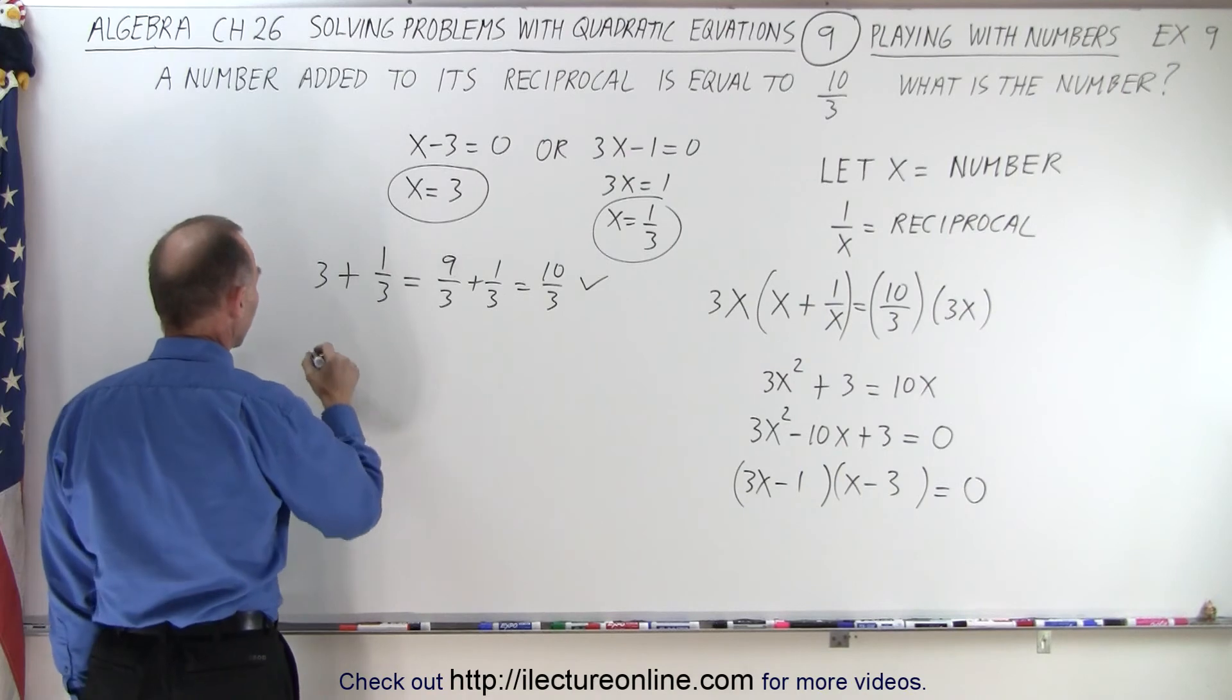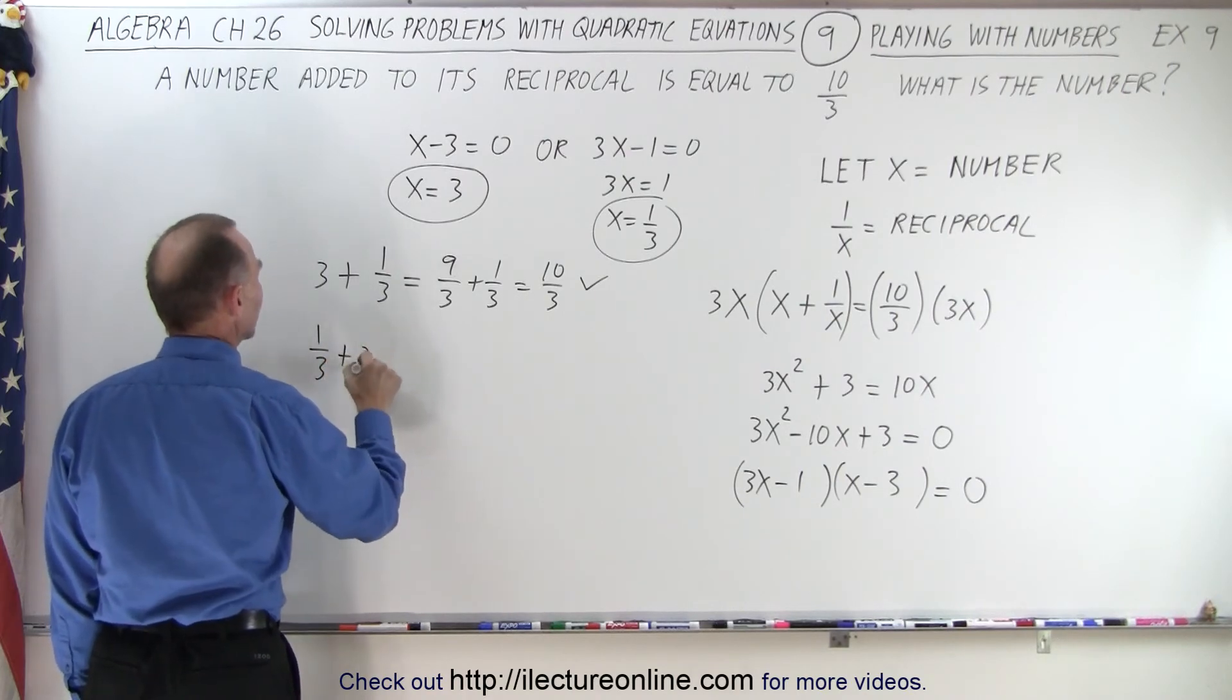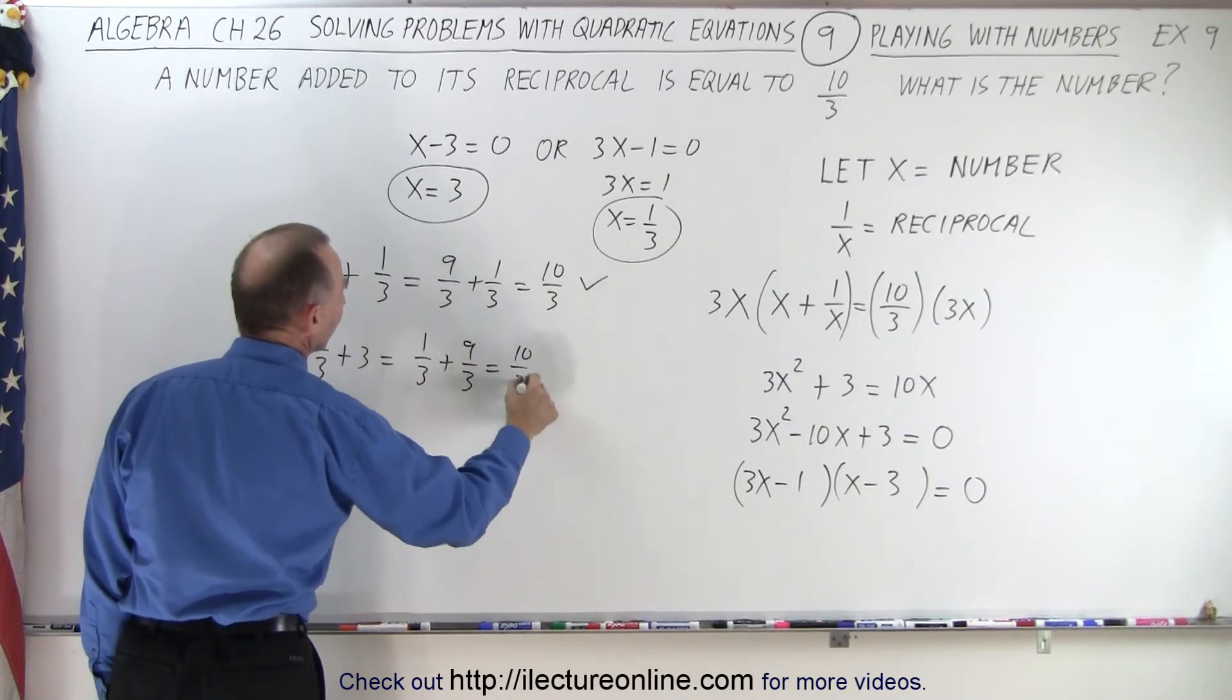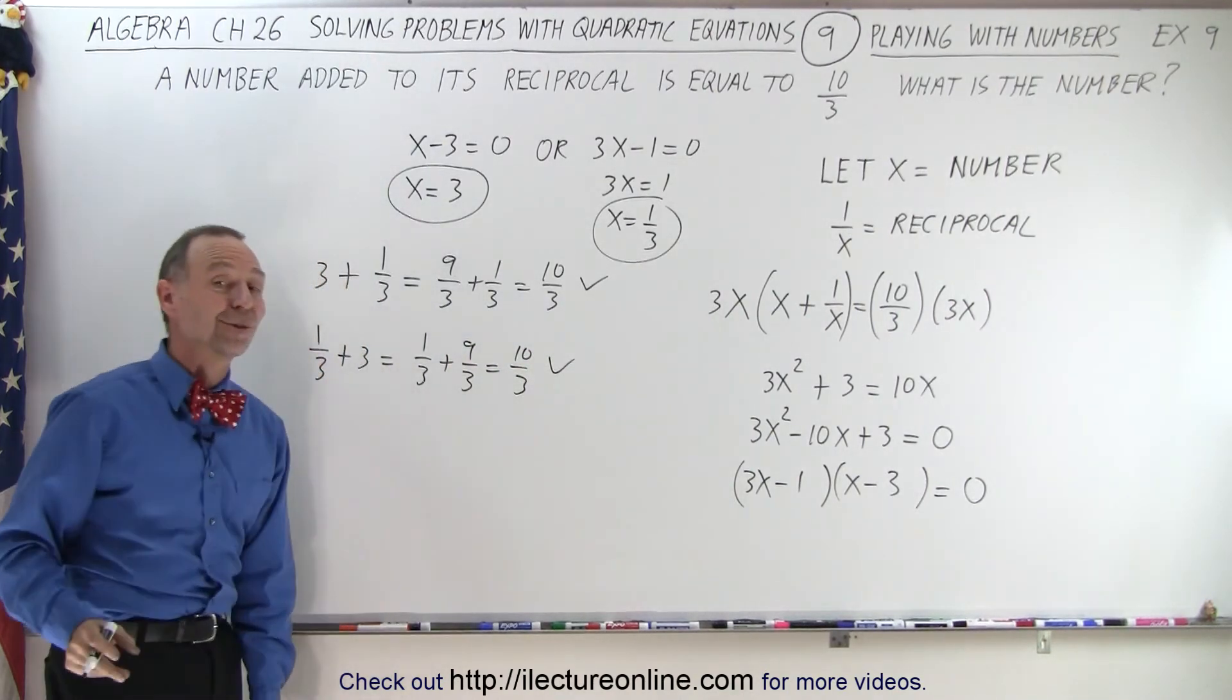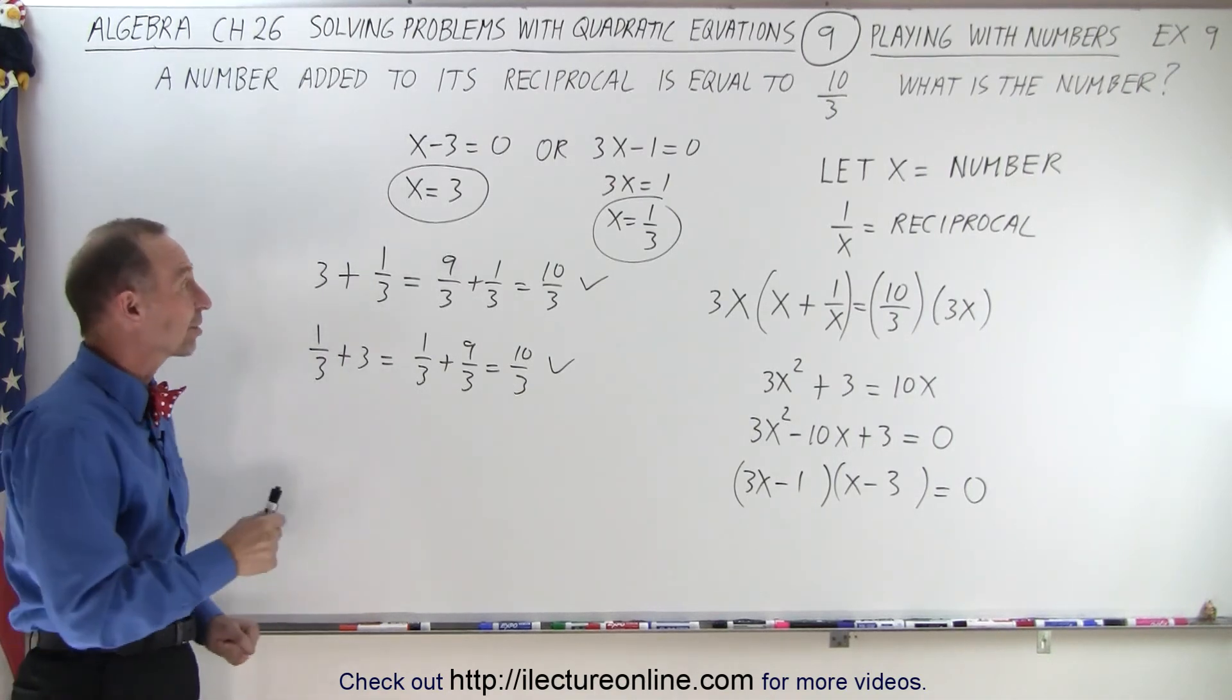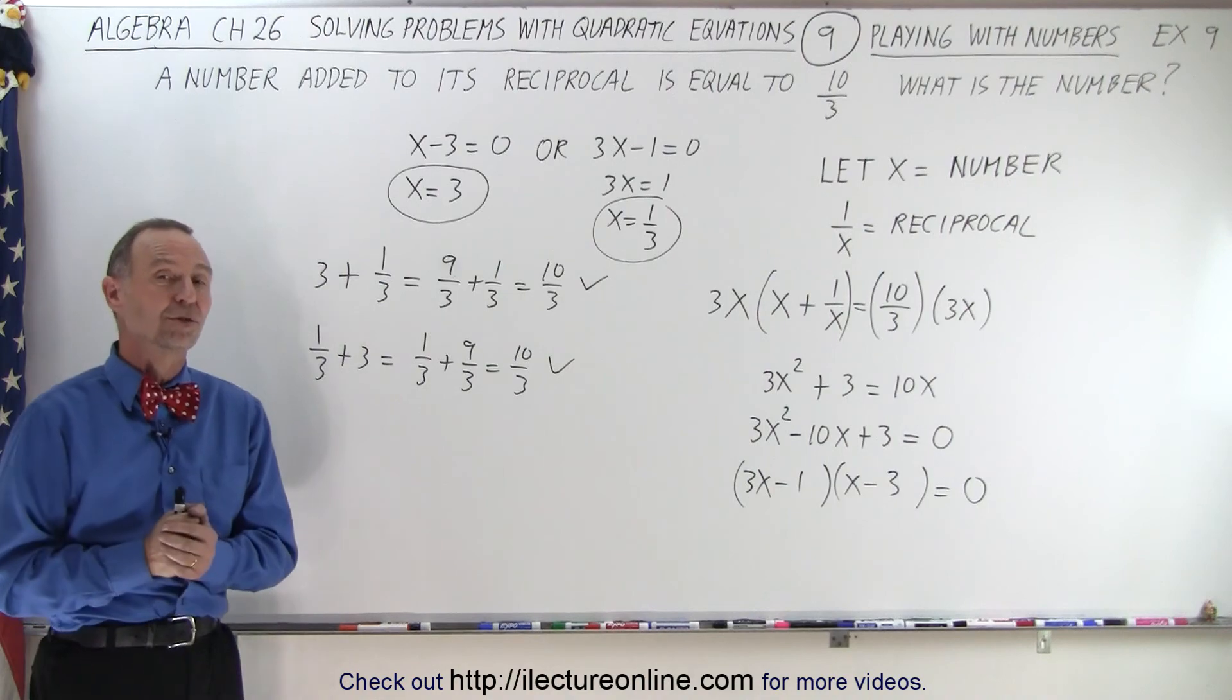How about 1 third? So 1 third plus 3, of course, the same thing. 1 third plus 9 thirds equals 10 thirds. So it looks like either solution is correct, meaning that x can be 3 or x can be 1 third. And both will give you the solution.